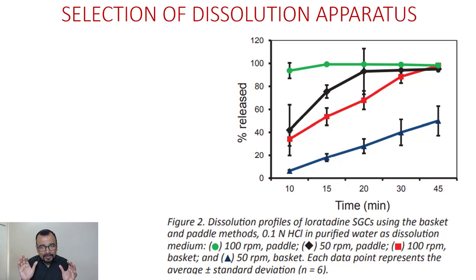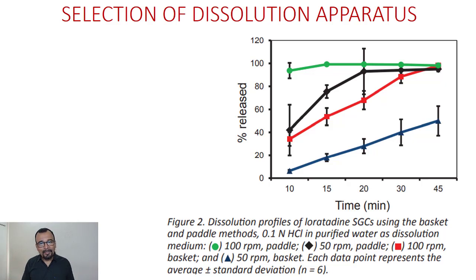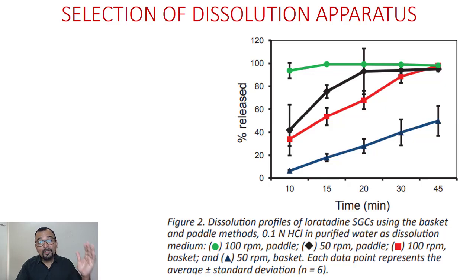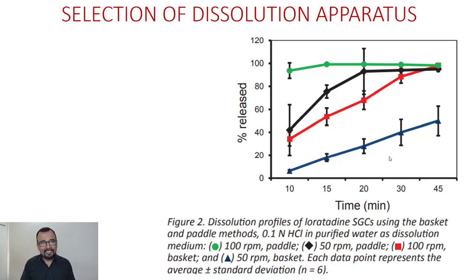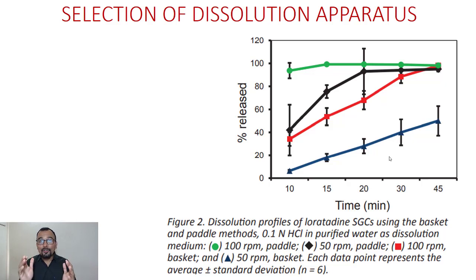The dissolution profile of loratidine soft gelatin capsules using basket and paddle is shown using 0.1N HCl, 900 mL. The green line is paddle at 100 rpm, the black line is paddle at 50 rpm, the red line is basket at 100 rpm, and the last line is basket at 50 rpm. This gives four experimental datasets — two with paddle and two with basket — to draw conclusions about apparatus selection.